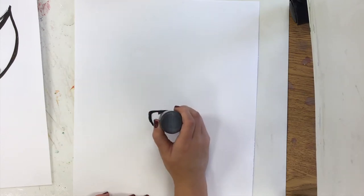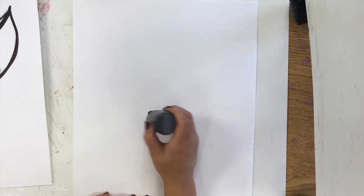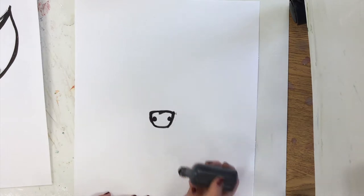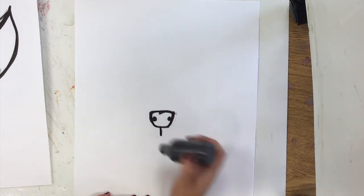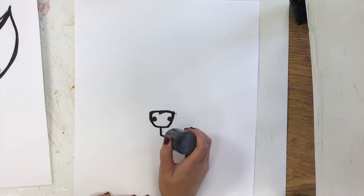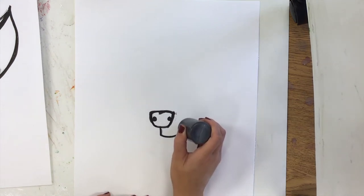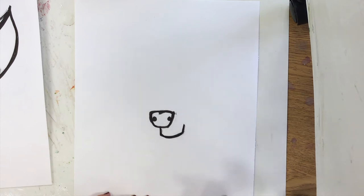Then coming down from that, you're just going to make a little line. And then the lines of your dog's mouth, curving out. And then the under part of his mouth is right here.